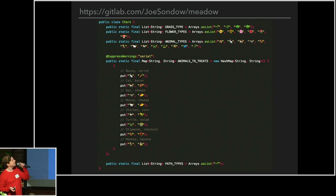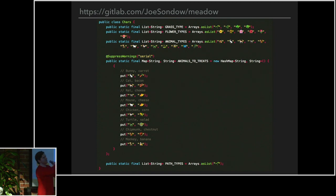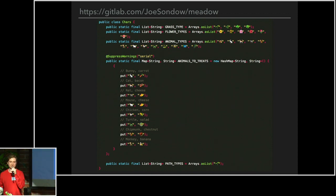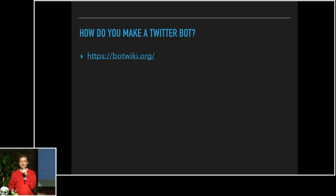There's a bit of code from the meadow similar in spirit to the fish: there are the grass types, the flower types, the animals, and then the chance of the animal-to-treat mapping — a list of animals that have distinctive non-animal treats to go eat. So how do you make a Twitter bot? It's not that hard. There are a lot of different ways depending on your background and what languages you're comfortable with. It's mostly just learning an API, or someone else's library that touches the Twitter API.